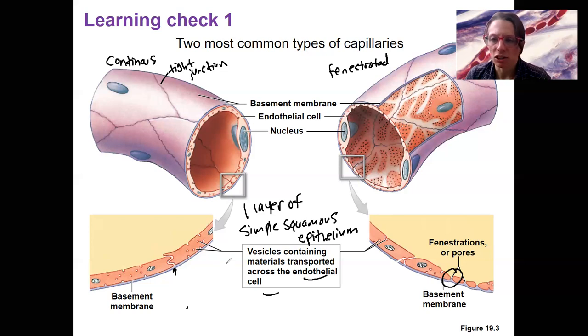The basement membrane is just an acellular matrix that holds it all together. So we're going to look at what can pass across these different types of capillaries. You can already probably imagine different stuff can pass across here more or less easily. You might already have some predictions in terms of fenestrations.